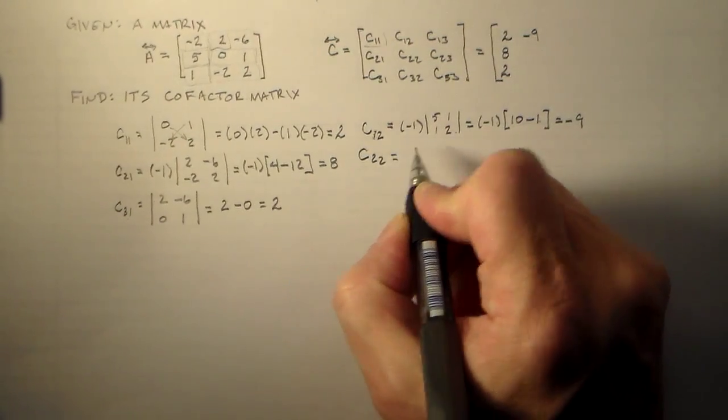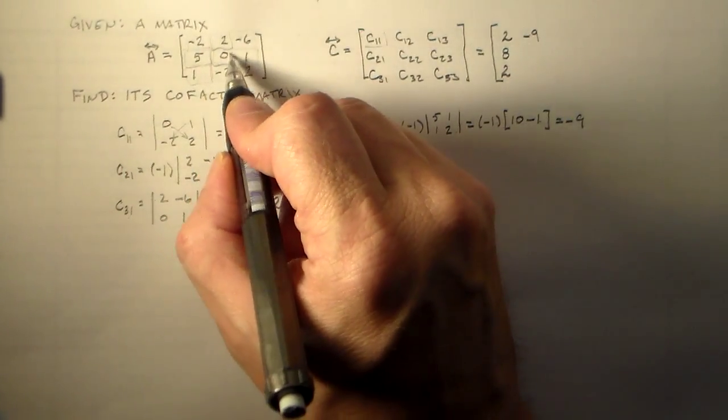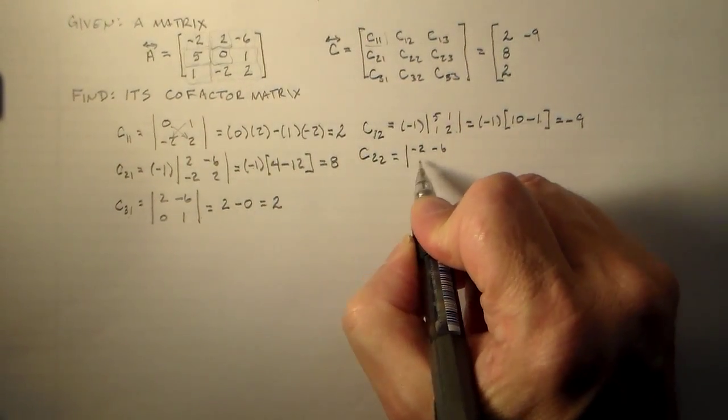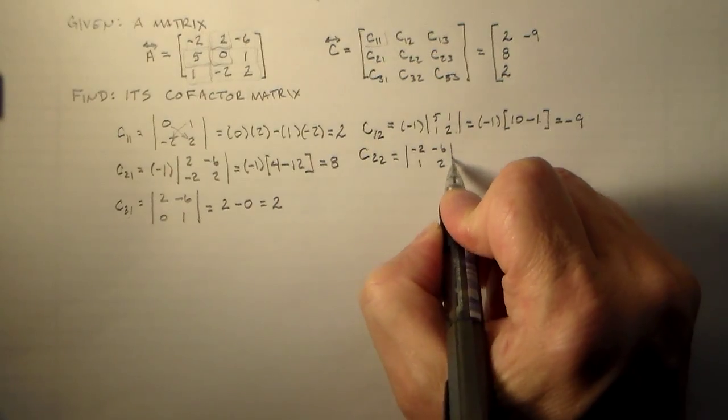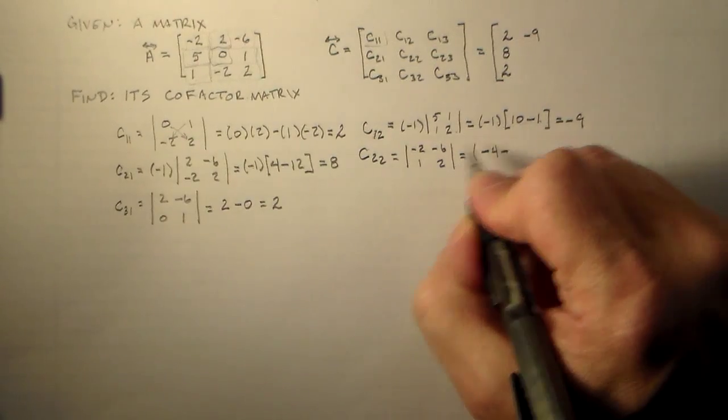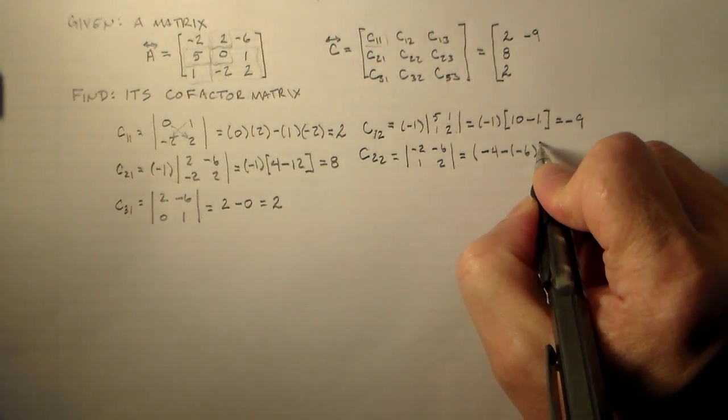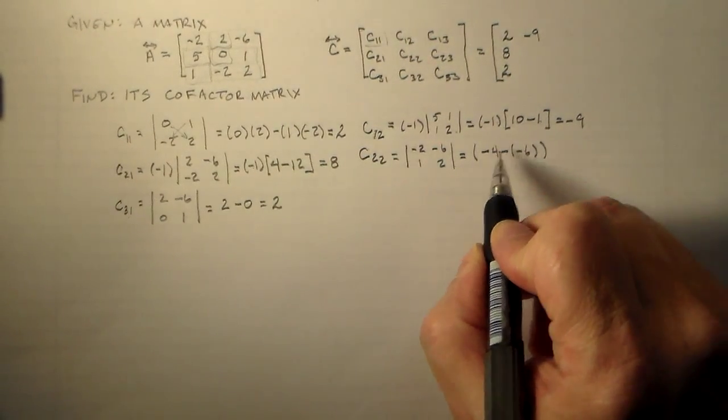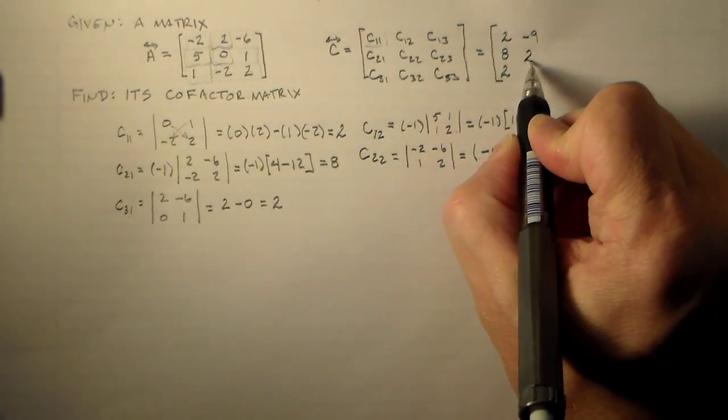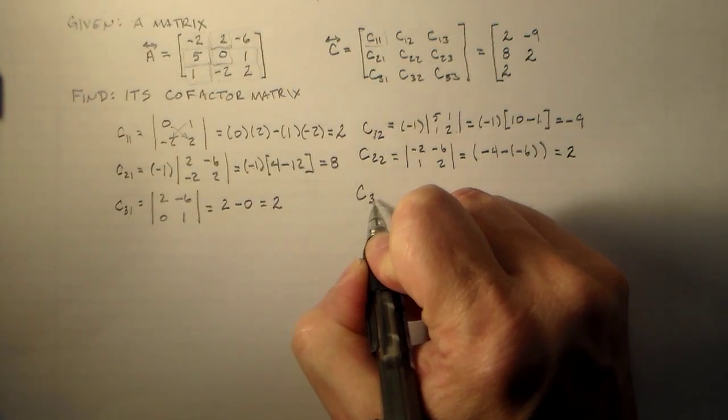Then we have C22. 2 plus 2 is 4. So we don't have a minus 1. We eliminate the middle. So we have minus 2, minus 6, 1, 2. So, minus 2 times minus 2 is minus 4. And then we subtract minus 6 times 1, which is minus 6. Right. So that is 6 minus 4, which is equal to 2. We're getting a lot of 2's. Seems to me like somebody really, really liked 2's.